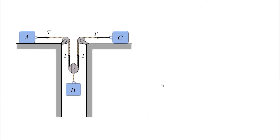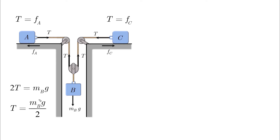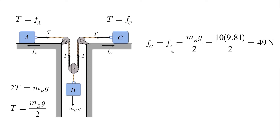We start by putting the tension in equilibrium, then the friction forces for A and C, and also the weight of B. Solving this as a static system: for A, T equals the friction; for C, T equals the friction; and for B, 2T equals mB·g. From this, tension T = mB·g / 2, which equals 49 N. Both friction forces Fa and Fc are therefore also 49 N.